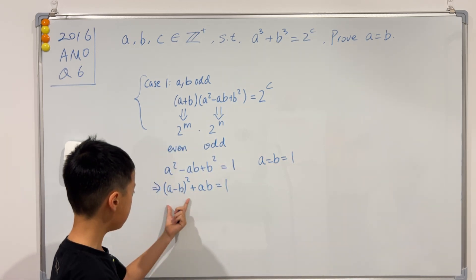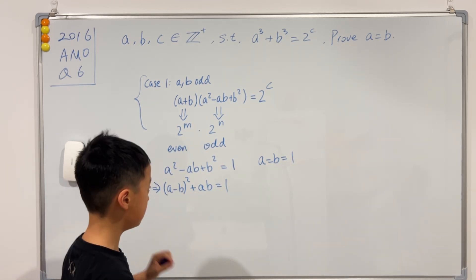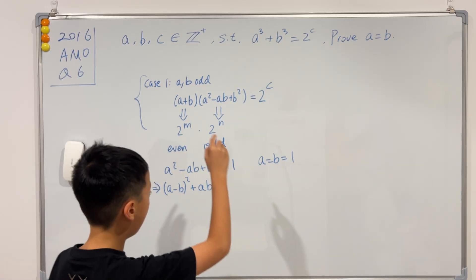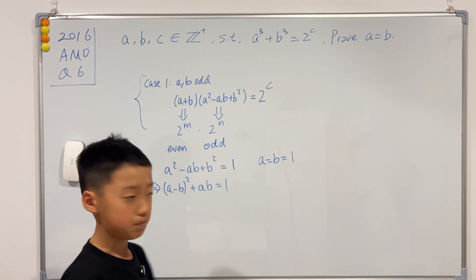So this is actually not possible unless a is equal to b and equals 1. Because if a equals b, then this first bracket will just be 0. And that is very useful. So we proved that if a and b are odd, then a must equal b.